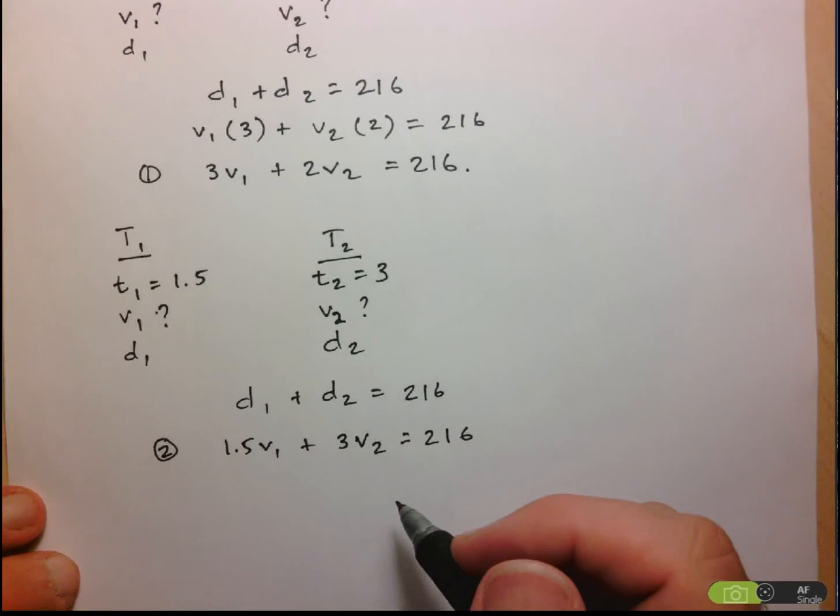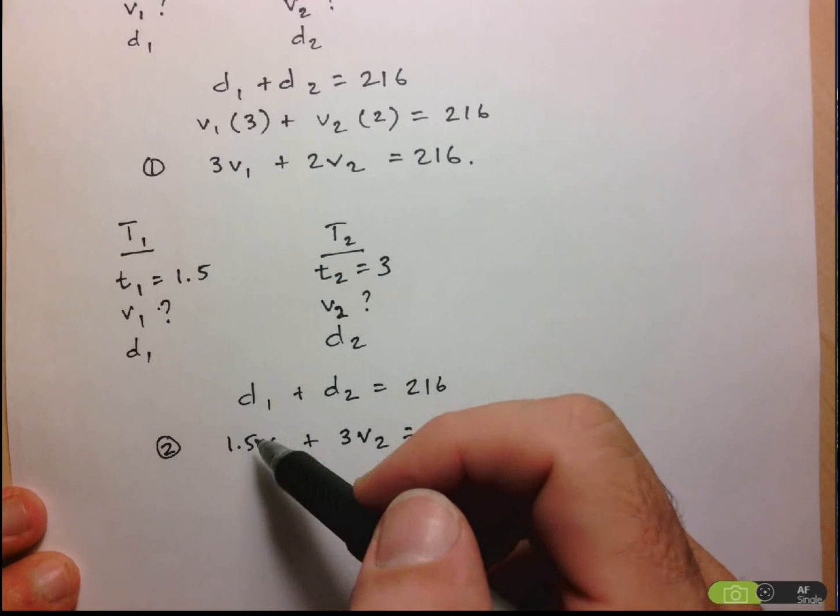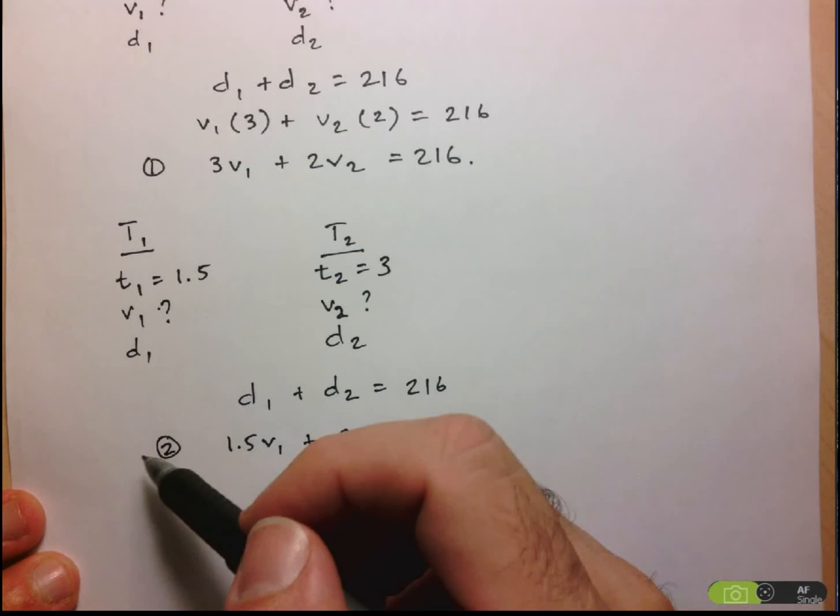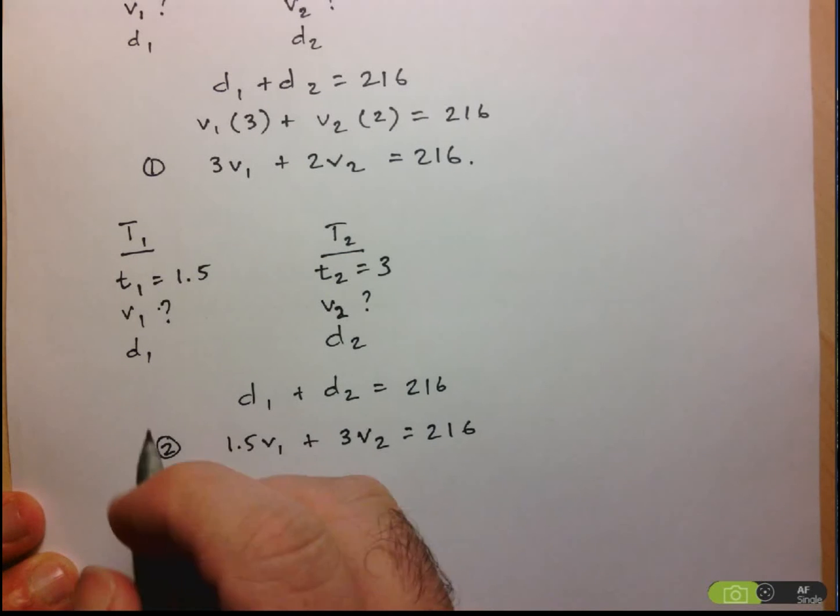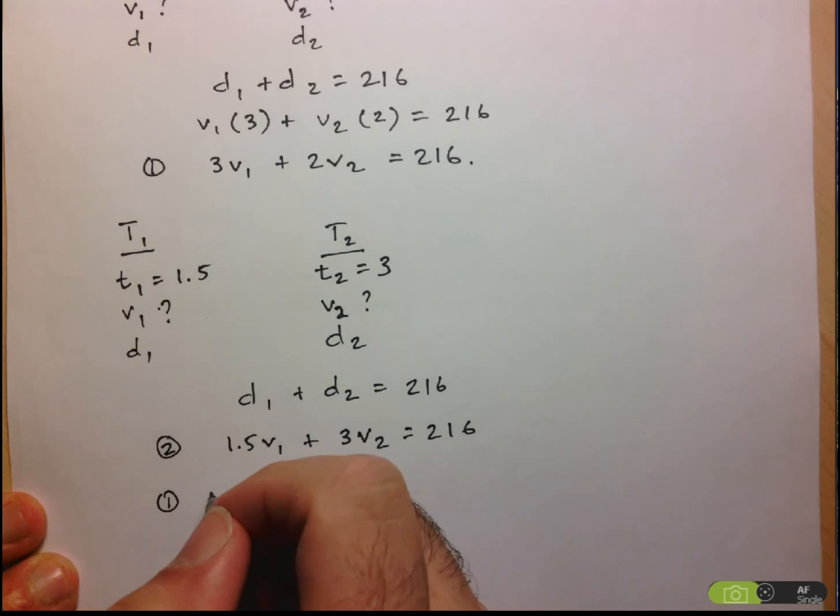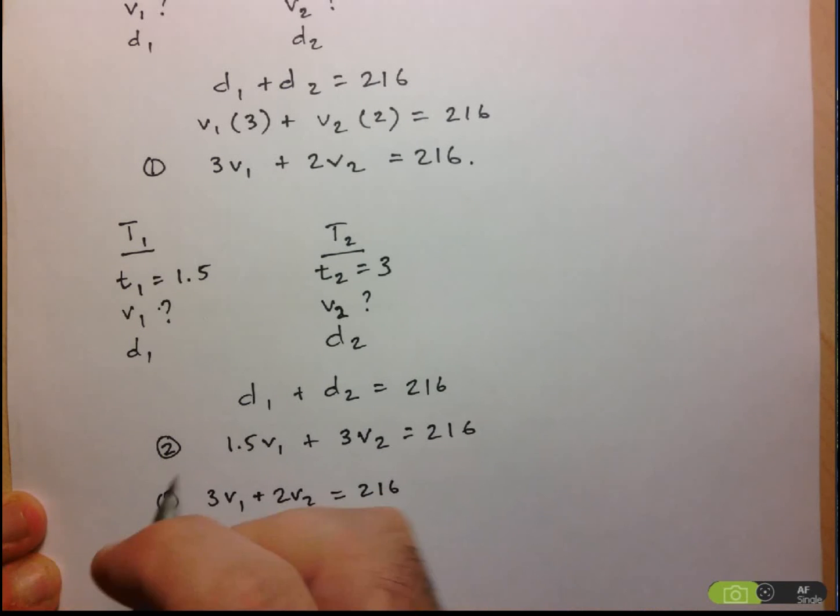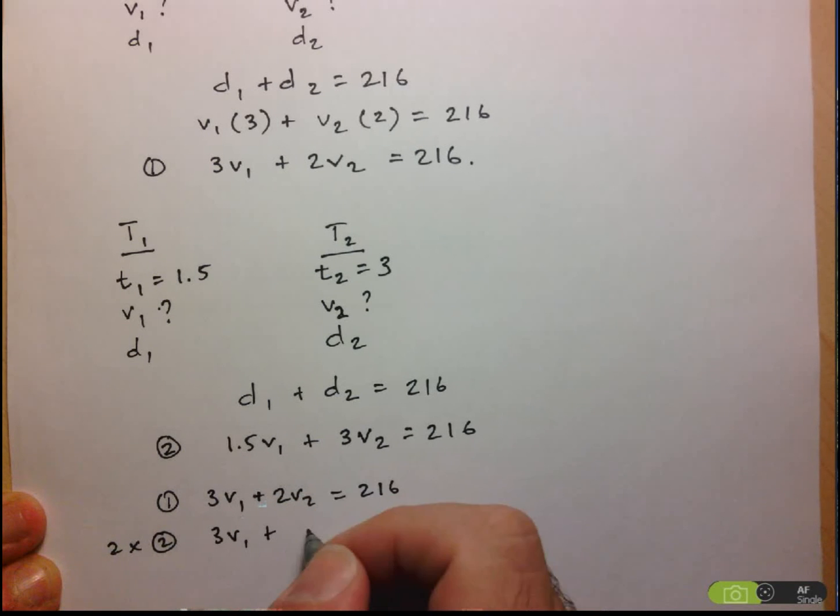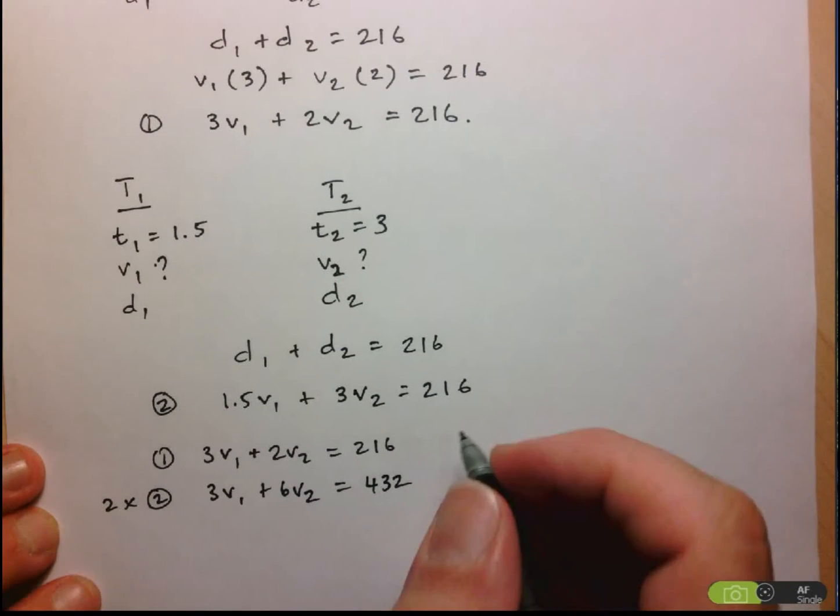So let's go ahead and solve this. So I notice here, this should be done through elimination, so I'm going to multiply the second equation by 2, so that the coefficients of the V1s will be the same. So equation 1, I won't change, 3V1 plus 2V2 equals 216, but I'm going to multiply equation 2 by 2. So I have 3V1 plus 6V2 equals 2 times 216 will be 432.